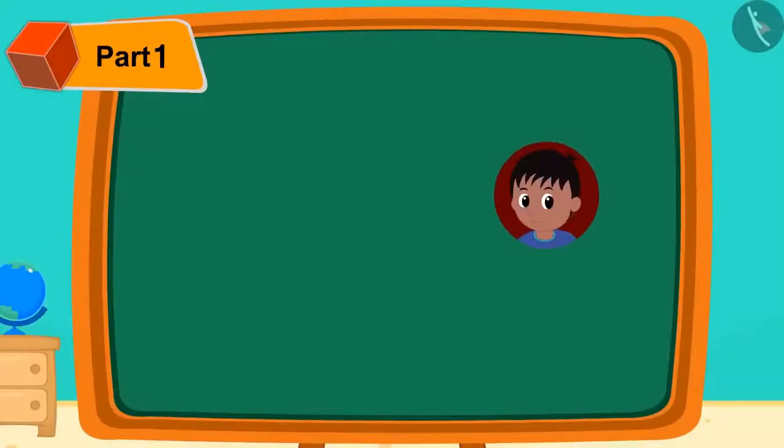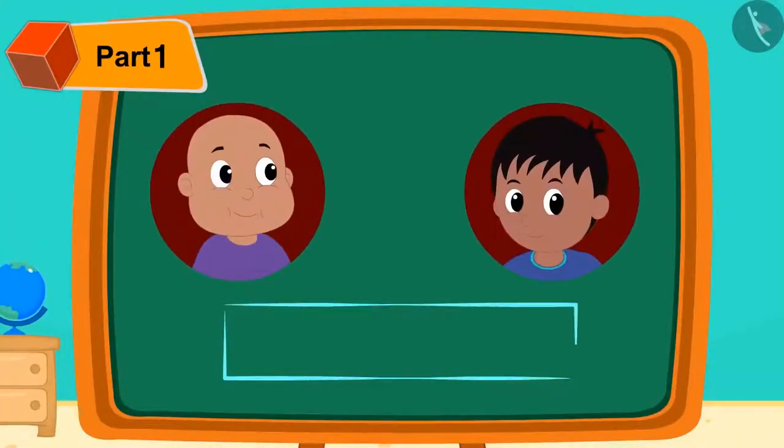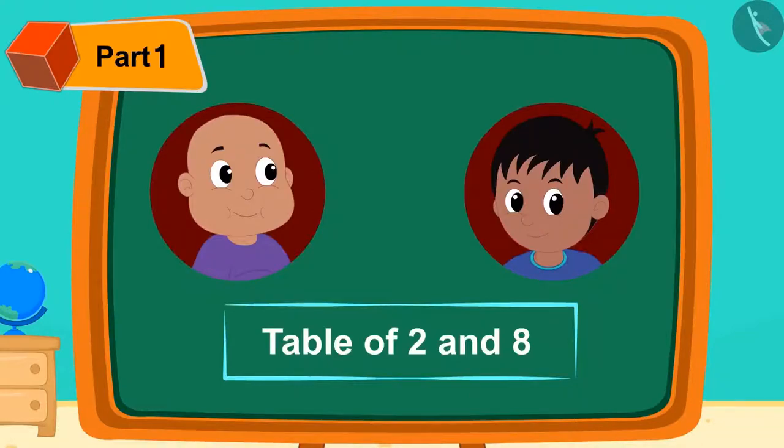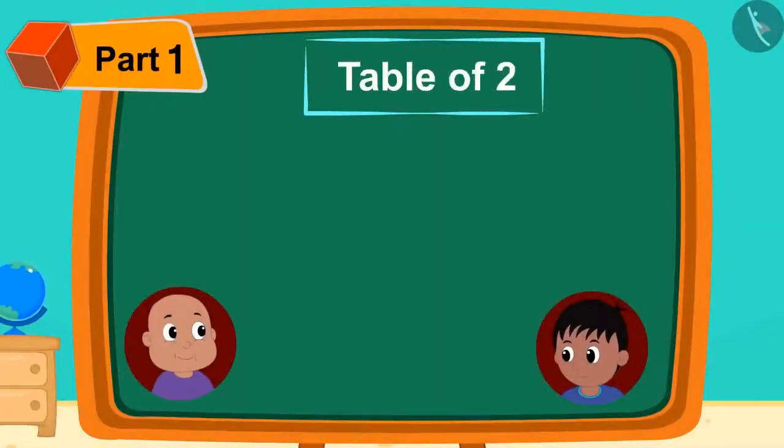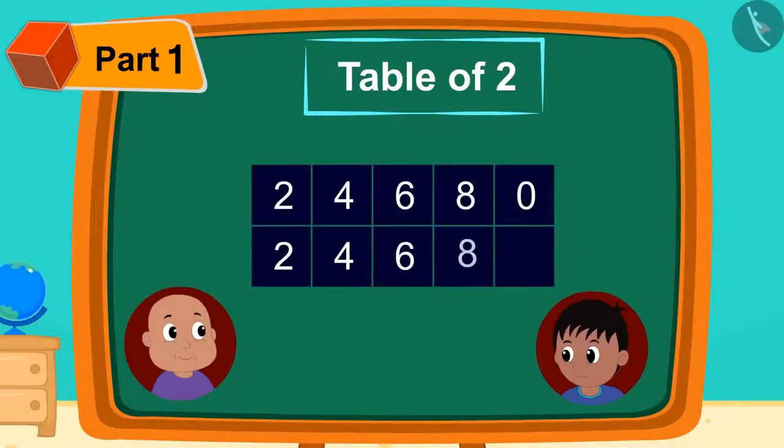First, Raju is teaching Bablu the easy way to memorize the table of 2 and 8. Raju is first referring to 2's table. He wrote these patterns in a table.